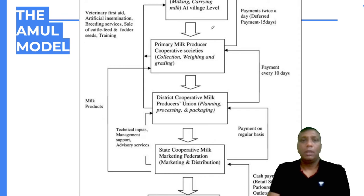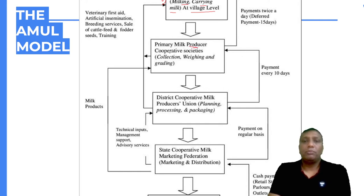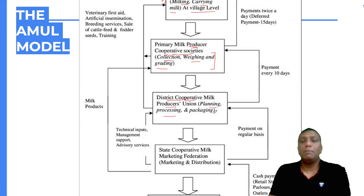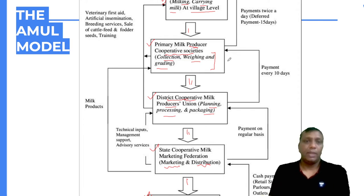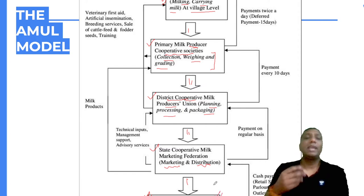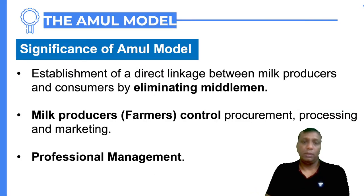The detailed flow chart shows: Amul producers carry milk at the village level; primary cooperative societies weigh and grade the milk; district cooperative milk producers do planning, processing, and packaging; state cooperative milk marketing federations handle marketing and distribution; and finally the outlets sell to consumers on a cash basis. The payment process also differs at each different level and channel in the Amul model.